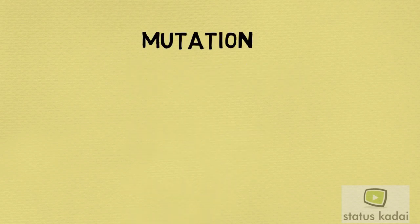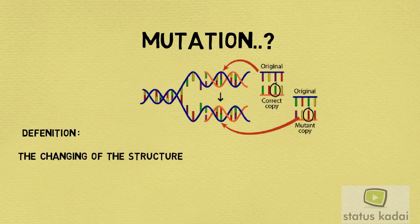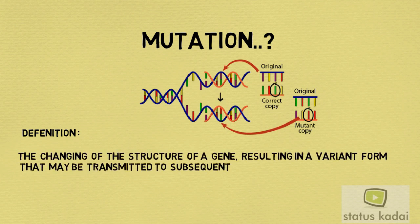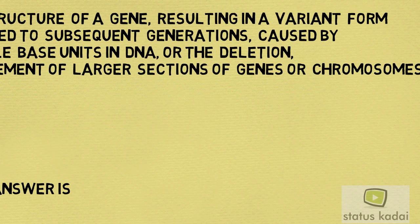What is mutation? The definition: the changing of the structure of a gene, resulting in a variant form that may be transmitted to subsequent generations, caused by the alteration of single base units in DNA, or the deletion, insertion, or rearrangement of larger sections of genes or chromosomes.